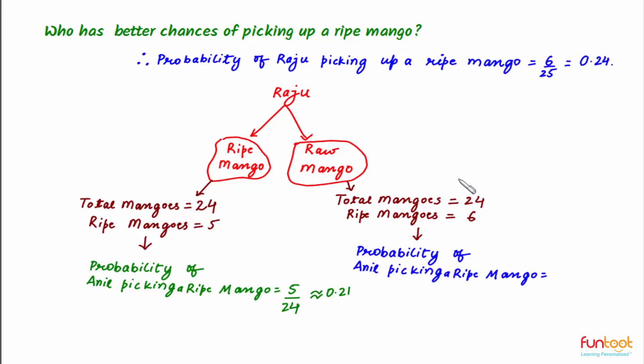And in this case, probability of Anil picking up a ripe mango will be 6 by 24 which is equal to 0.25.